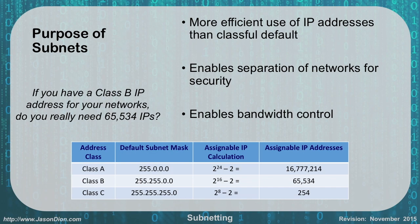Because I'm using a private scope, it's not a big deal. But if I was using public IPs that were routable, I'd have to pay for each and every one of those IPs whether I was using them or not, which can become very pricey. By subnetting, we can eliminate a lot of that waste.